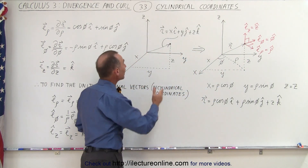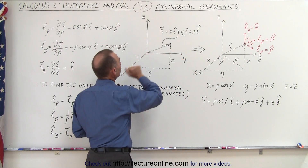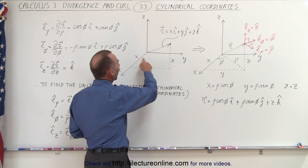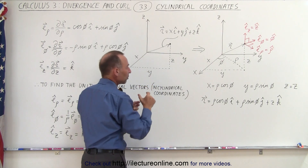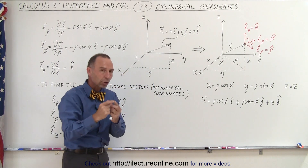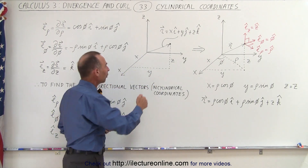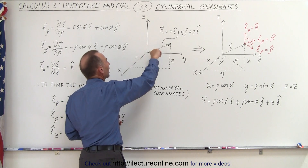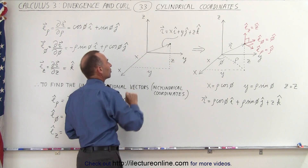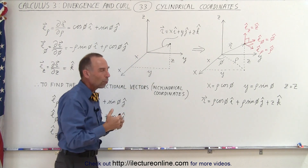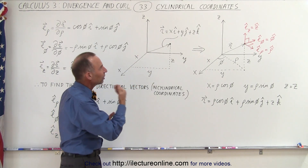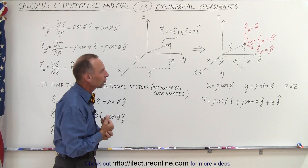Now of course, in the Cartesian coordinate system we have unit vectors i, j, and k, which are one unit long and pointing in the direction of the x-axis, the y-axis, and the z-axis. So what are the unit vectors in cylindrical coordinates?